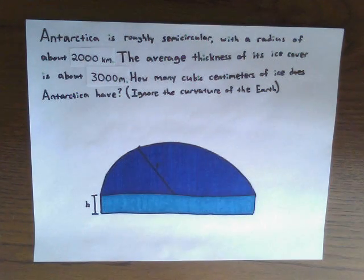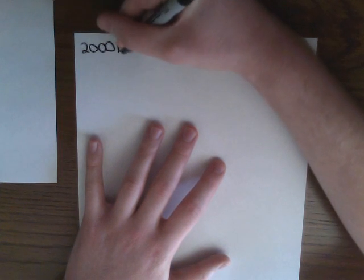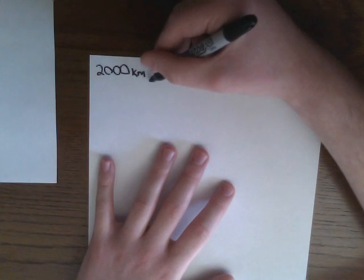Our first step in solving this problem is going to be to convert both of those units into centimeters. We're going to do that by setting up a basic conversion table here. What we are given is that the radius is 2,000 kilometers. So in order to convert that into centimeters, we're going to start by converting it into meters.